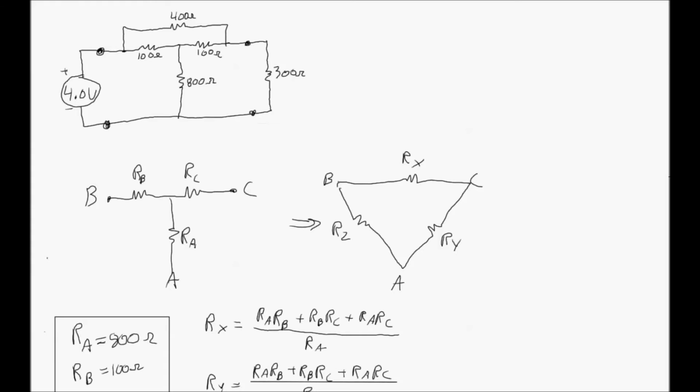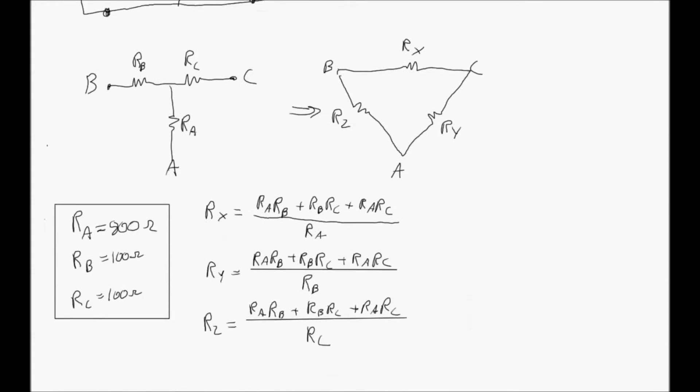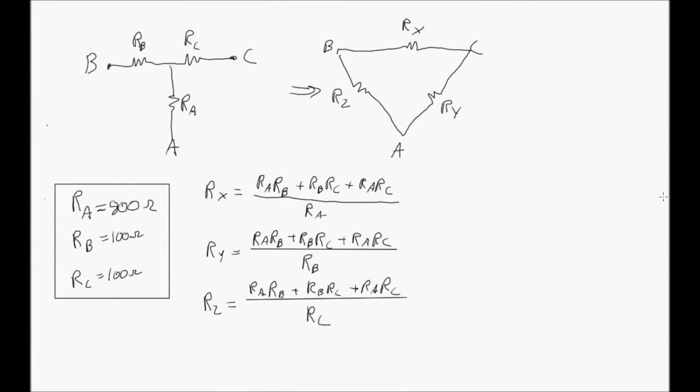So, we've isolated which part of the initial circuit that we want to transform using the delta-y transformation. It's going to be the 100, 100, and 800 ohm resistors. Throwing those into variables, RA, RB, and RC, we then use the delta-y equations to get the resistance values of the triangle circuit. So, in this case, we know RA, RB, and RC.